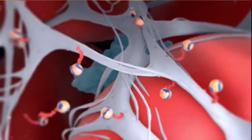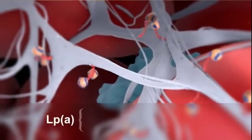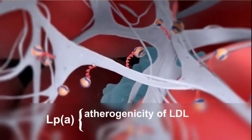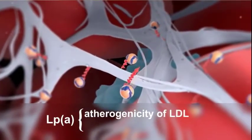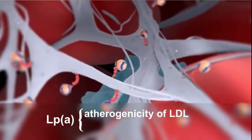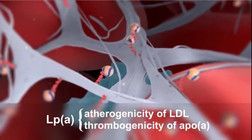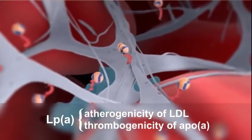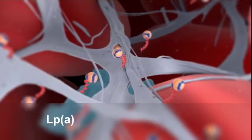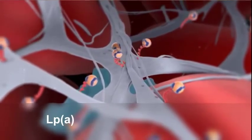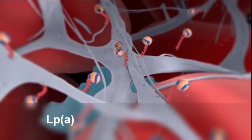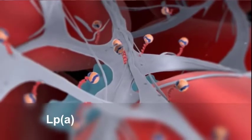Because of its unique structure, Lp(a) combines both the potential atherogenic risk associated with LDL particles and the potential thrombogenic risk attributed to apo(a). In addition, Lp(a) carries and deposits oxidized phospholipids, increasing inflammation.